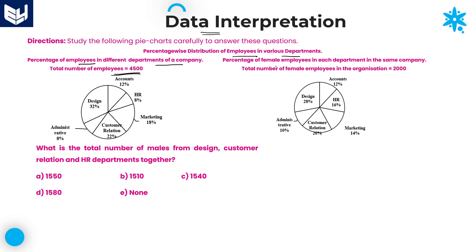Coming to the second pie chart, it is about the percentage of female employees in each department in the same company. The total number of female employees in the organization is 2000. So if total employees are 4500 and total female employees are 2000, then total male employees equals total employees minus total female employees, which gives 2500. If you want male values at any point, it is simply total minus female.